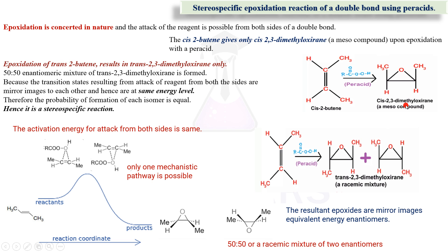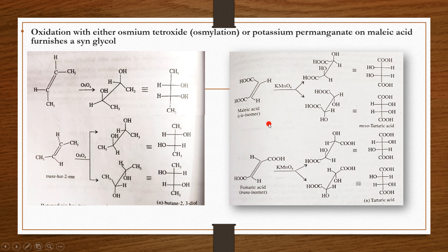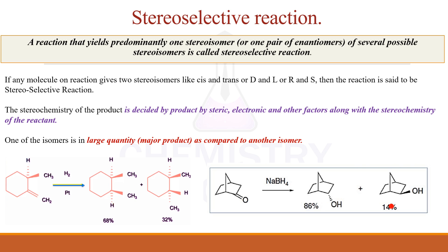Formation of meso depends on the reactant — cis-2-butene. Formation of the racemic mixture depends on trans-2-butene. So this is a stereospecific reaction. Similarly, there are other examples like osmium tetroxide, which is a hydroxylation reaction, and KMnO4 hydroxylation. Formation of meso depends on the cis form; formation of the racemic mixture depends on the trans form. Similarly, for malic acid, the cis isomer gives mesotartaric acid and the trans isomer gives the racemic mixture. All these are stereospecific reactions.